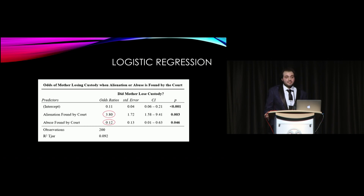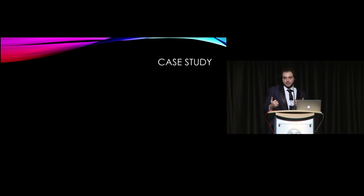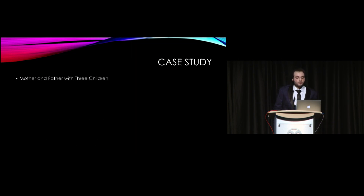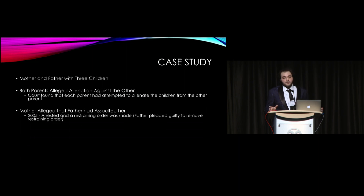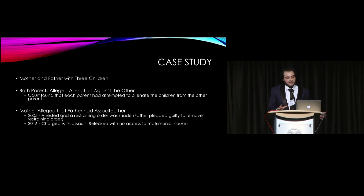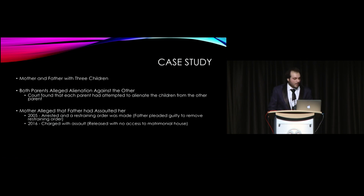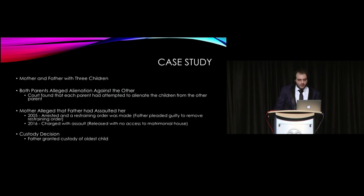Instead, I reviewed all six of those cases to see if the mother lost custody and whether bias was present. Only one of the six cases resulted in the mother losing custody. In that case, a mother and father with three children both alleged alienation against each other, and the court found both had attempted to alienate the children. On two separate occasions the mother alleged the father assaulted her: in 2005 he was arrested and a restraining order was issued, though he pleaded guilty only to remove the restraining order; in 2016 he was charged again but released due to insufficient evidence, though denied access to the matrimonial home. The judge allowed the children to decide custody — the father received custody of the oldest child who chose him, and the mother retained custody of the other two children.